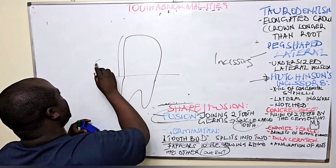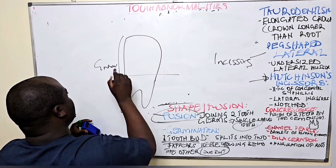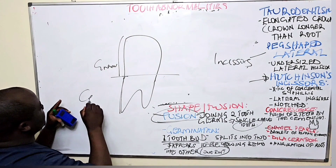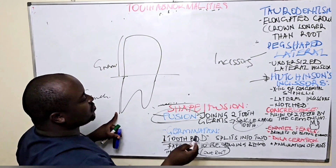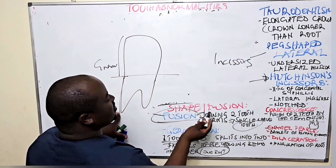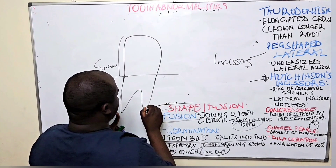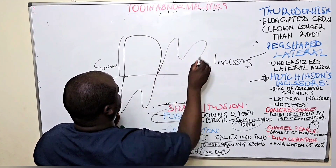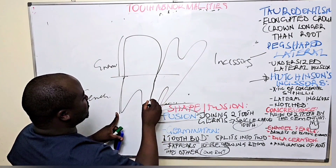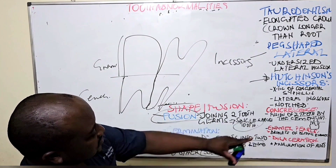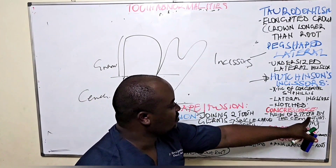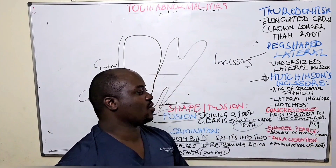Concrescences involve the fusion of teeth by the cementum. Since the cementum covers the root portion of the tooth, what is fusing in concrescences are the roots — the roots of adjacent teeth fuse together via cementum.